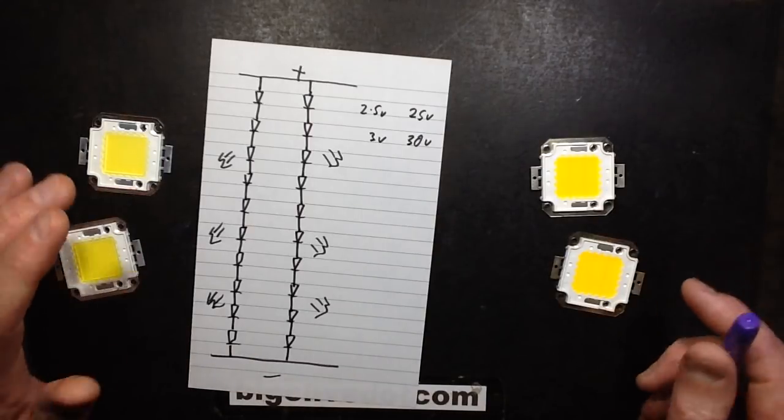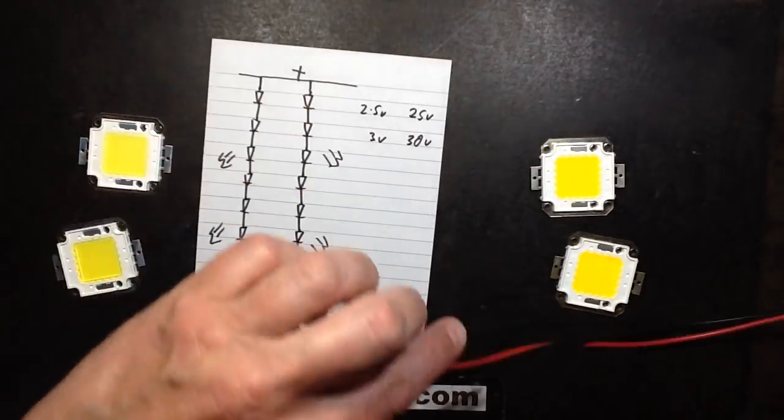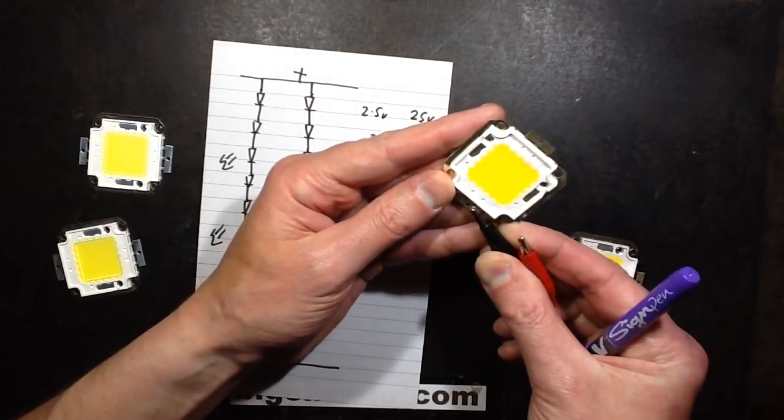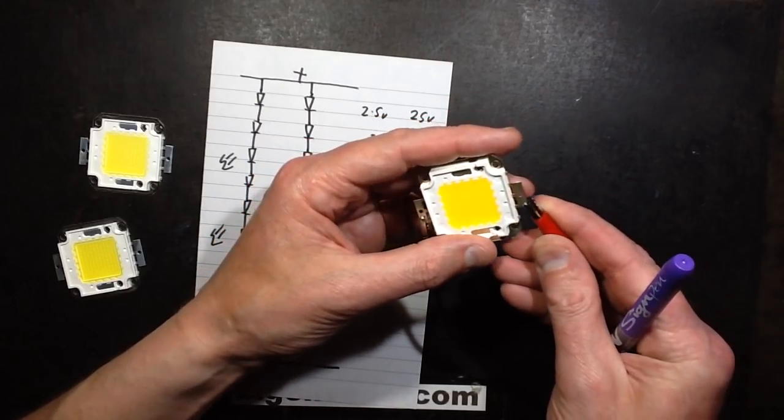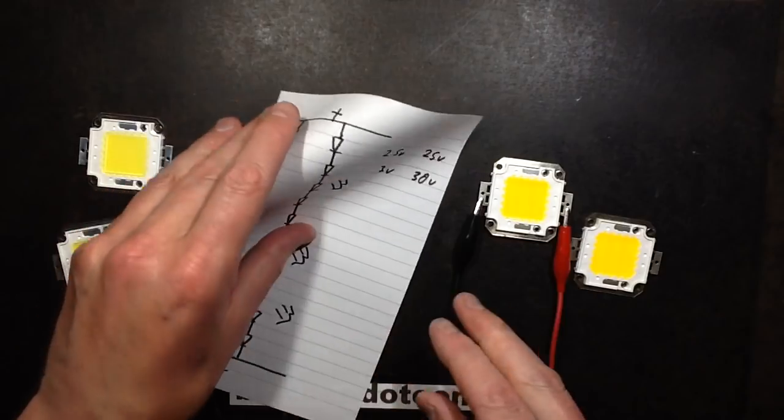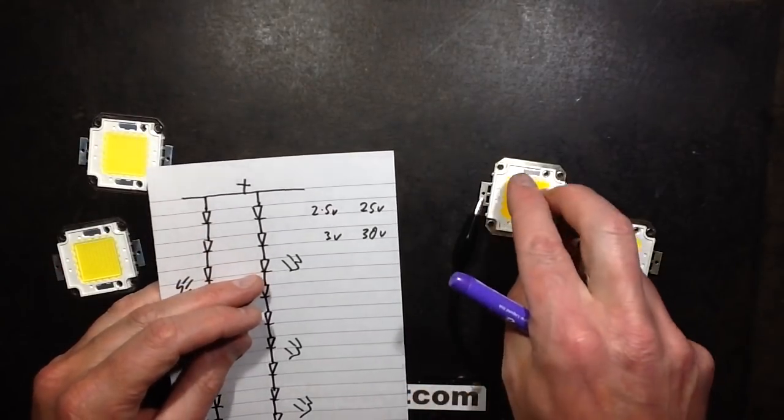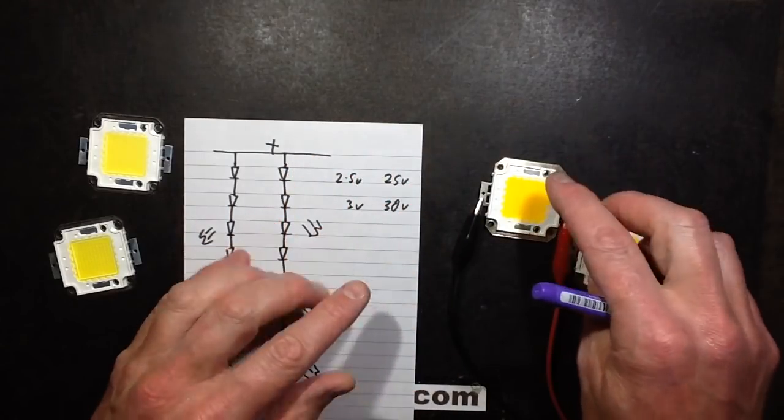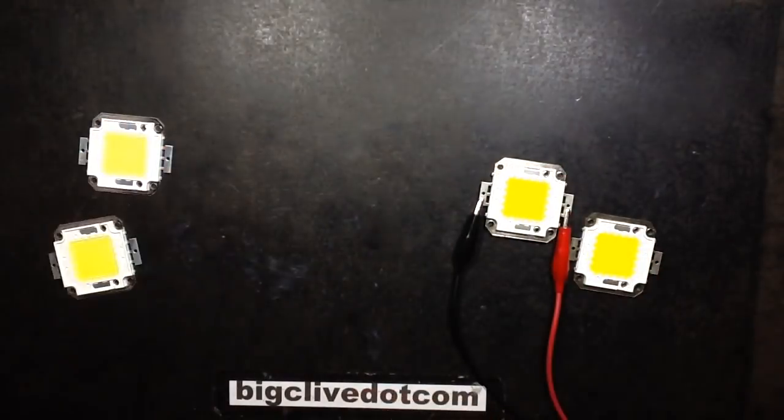So typically you'd expect that if I got a power supply and I hooked it up to one of these LEDs, I'm going to tell you right now I'm not going to run this anywhere near its full power because I don't want to damage it because it doesn't have a heatsink on it. But I would expect this to start glowing evenly, all the chips would be perfectly matched and all the series circuits would start glowing round about 25 volts.